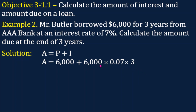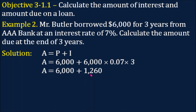So the principal is $6,000, times the interest rate written in decimal form — 0.07 — then times T, or time, which is 3 years. Performing the operation: $6,000 plus ($6,000 times 0.07 times 3) equals $6,000 plus $1,260. Our answer is $7,260.